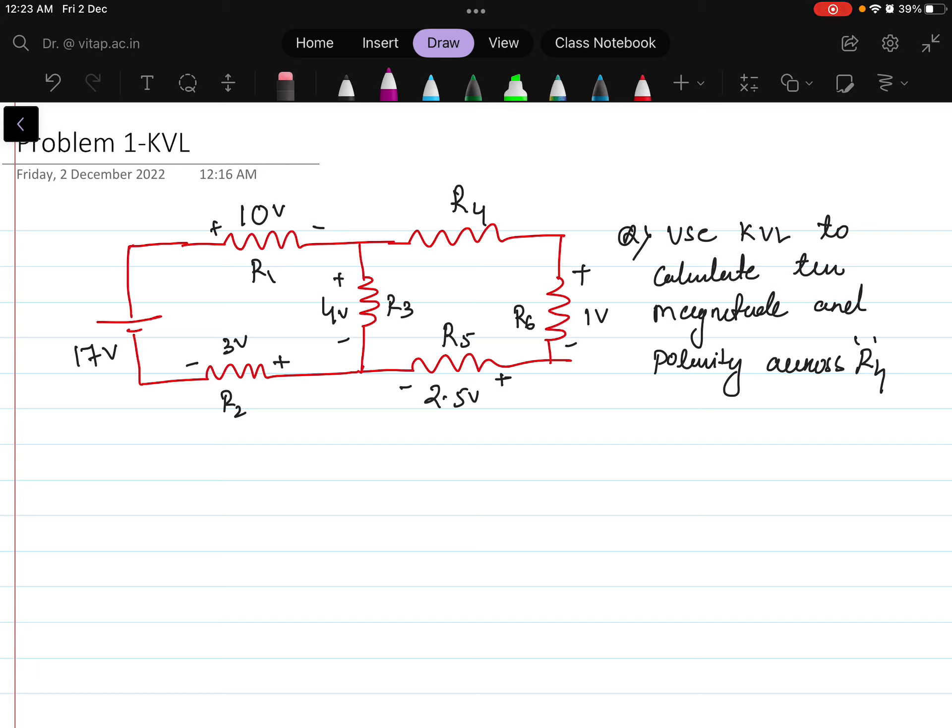Some resistances are connected and across each resistance the voltage value is given. You can see here voltage value across each resistance is given and the polarity is also given. The question is: use KVL to calculate the magnitude and the polarity across R4 of the voltage. Calculate the voltage magnitude and the polarity across the resistor R4.